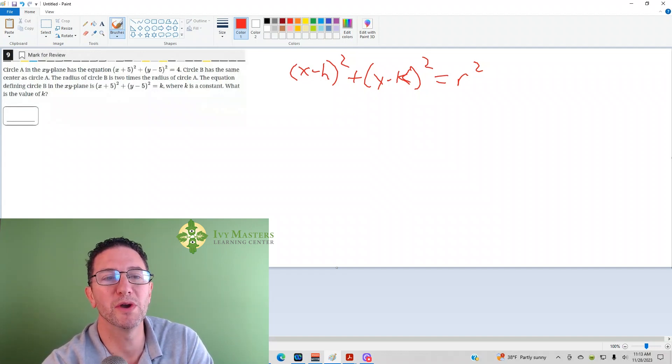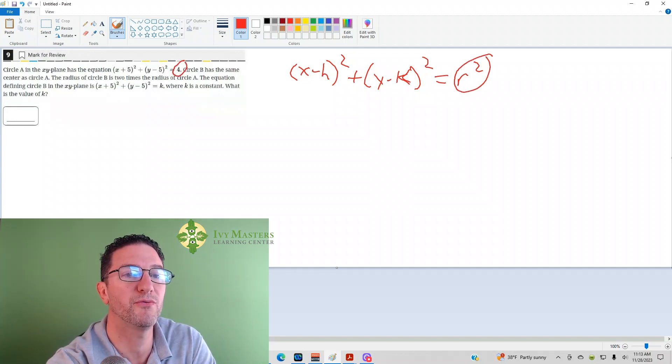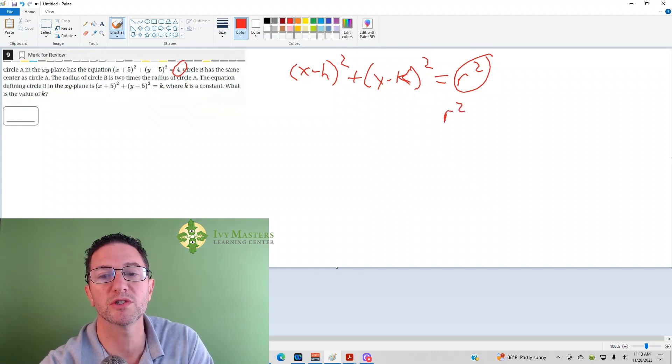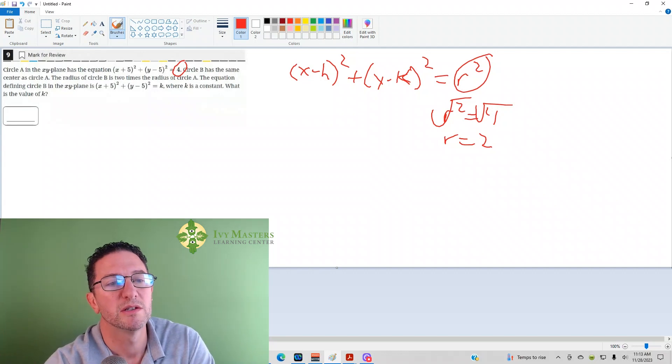r² is the radius. So, that's what this question is asking about. r² is isolated on the right, 4 is isolated on the right. In other words, r² = 4, and if you take the square root of both sides, r = 2. So, this equation has a radius of 2.